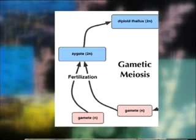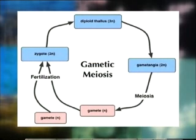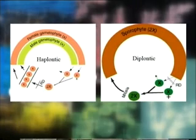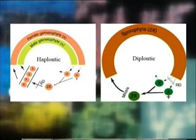Thus, this life cycle is characterized by the dominance of diploid phase and gametogenic meiosis which produces haploid gametes. Like the haplontic life cycle, this life cycle does not exhibit true alternation of generation since there are no morphologically distinct sporophytic and gametophytic generations.